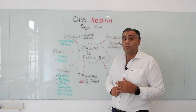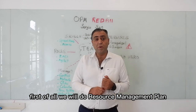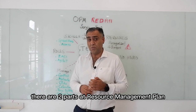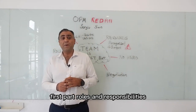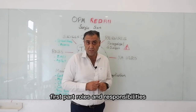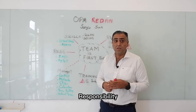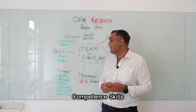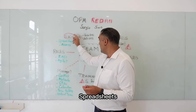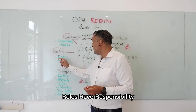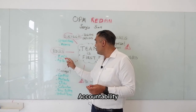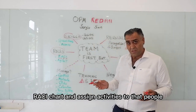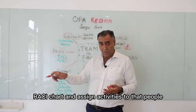First of all, we will create a resource management plan. There are two parts. The first part covers roles and responsibilities: roles, authority, responsibility, assigned duties, and competence — skills. We use spreadsheets: a RACI chart covering roles, responsibility, accountability, consultant, and inform. A simple RACI chart to assign activities to people.